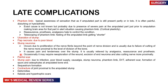Other complications include painful scars and stump pain, attributed to infections, poor blood supply, causalgia, stump neuromas, phantom limbs, DVTs, adherent scars, formation of bony spurs — osteophytes at the amputated bone end — and sequestrum formation, which is dead bone. Contractures of the joint at the amputated stump, deformities, keloids, and hypertrophic scars are also recognized late complications.